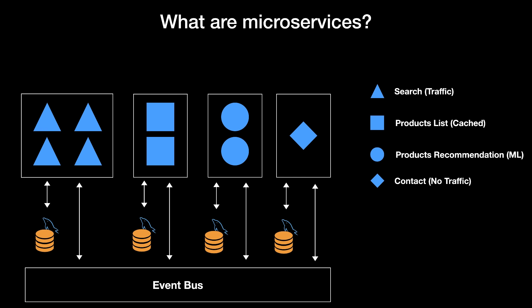Microservices are smaller independent services that have their own database and can communicate with each other using an event bus. In our example we will have four microservices, all with their own database, communicating via messages. The advantage is we can scale applications based on traffic — the search microservice is scaled four times compared to the contact microservice which has only one instance. Another advantage is separation of concerns: each team can focus on their domain and use a different programming language.